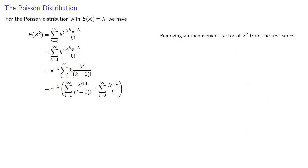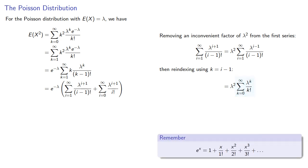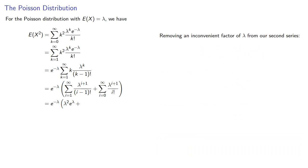Now we'll remove an inconvenient factor of lambda squared from the first series, then re-indexing using k equal to i minus 1, and here we see our old familiar series expansion for e to the lambda, and so this first series will be lambda squared e to the lambda. Similarly, we can remove an inconvenient factor of lambda from the second series, and once again we see our familiar e to the lambda, and so our expected value of X squared will be.